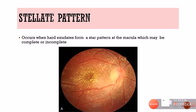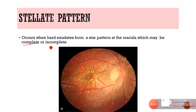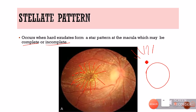The next pattern is the stellate pattern — a star-shaped arrangement. Hard exudates radiate from the macula in this configuration. The stellate pattern can be complete — a full star — or incomplete — only half the star is present.